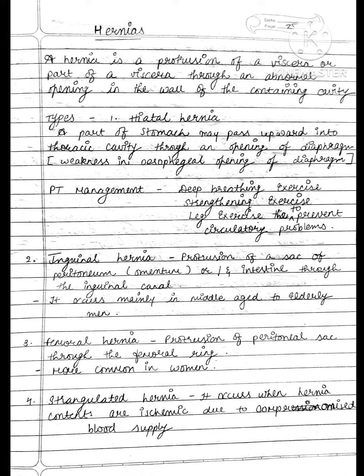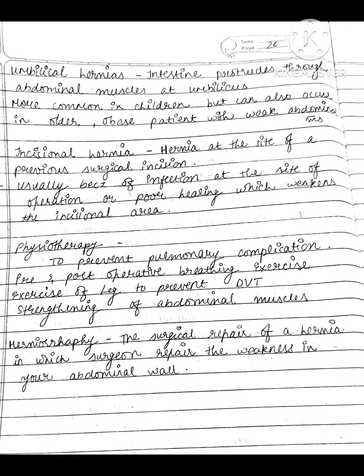Strangulated hernia occurs when hernia contents are obstructed due to compromised blood supply. Umbilical hernia is when the intestine protrudes through the abdominal muscle at the umbilicus. It is more common in children but can also occur in older or obese patients with weak abdominal muscles.